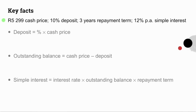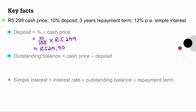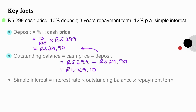The key facts are shown for reference. Deposit equals the percentage times the cash price: 10% times R5,299 gives R529.90. Then our outstanding balance equals cash price minus deposit: R5,299 minus R529.90 gives R4,769.10.